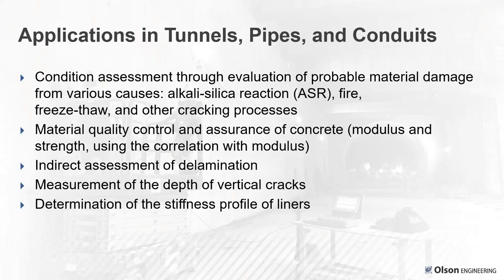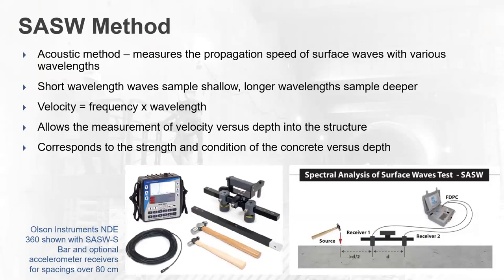SASW can also get the stiffness profile of liners — for instance, going from concrete into rock in a rock-type tunnel, measuring the rock velocity. Short wavelengths sample the shallow portion of concrete; longer wavelengths go deeper into the subgrade with greater spacings. You can use small accelerometers to get even larger spacing than the bar, which goes out to 80 centimeters with extension. Velocity equals frequency times wavelength — that's the fundamental physics of the surface wave test.